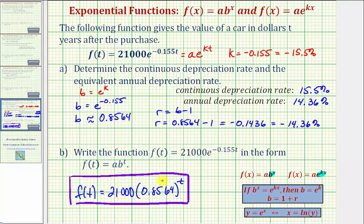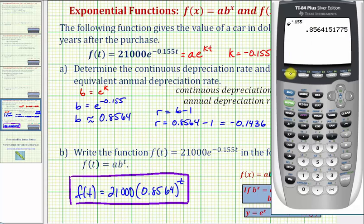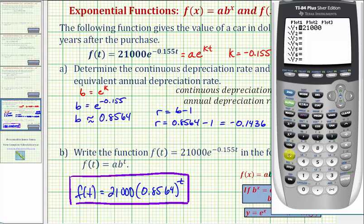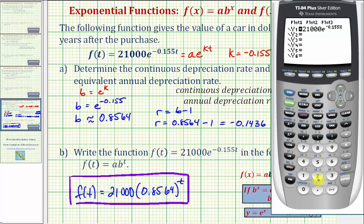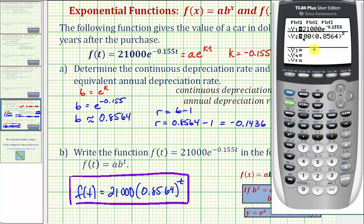Now let's use the graphing calculator to compare the given exponential function to the one we just found, to verify they're equivalent. We press y equals, clear out any old functions, and in y1 enter 21,000 times e raised to the power of negative 0.155, using x instead of t. Then in y2 we enter 21,000 times 0.8564 raised to the power of x. We'll use the table feature to compare the values of y1 and y2 for the same inputs.